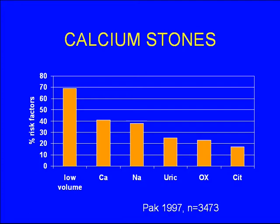This is literature from the American Journal of Internal Medicine by Charlie PAK, looking at over 3,000 consecutive patients evaluated at UT Southwestern. Everyone underwent a rigorous inpatient evaluation of about one week, on a formal low-calcium and normal-calcium diet with various analyses — essentially a modified version of 24-hour urines and blood tests. The single most common risk factor was low volume in 70% of patients, hypercalciuria in about 40%.